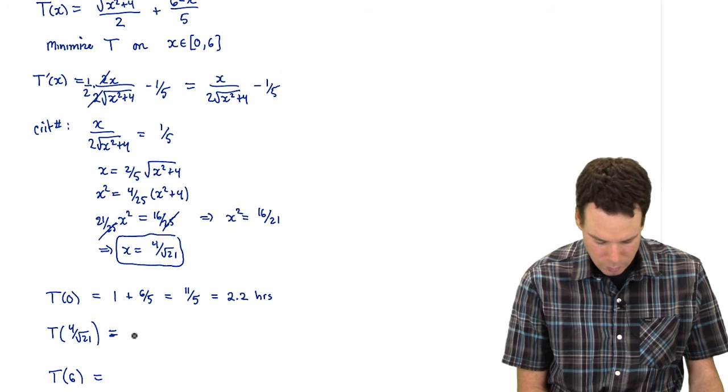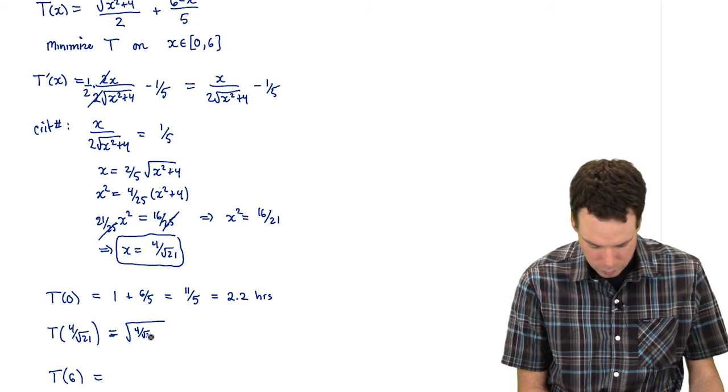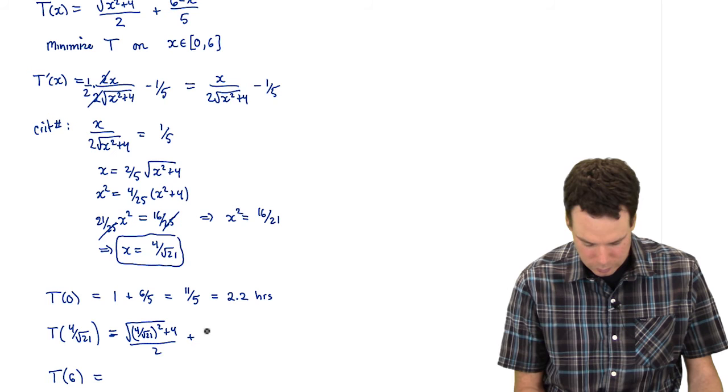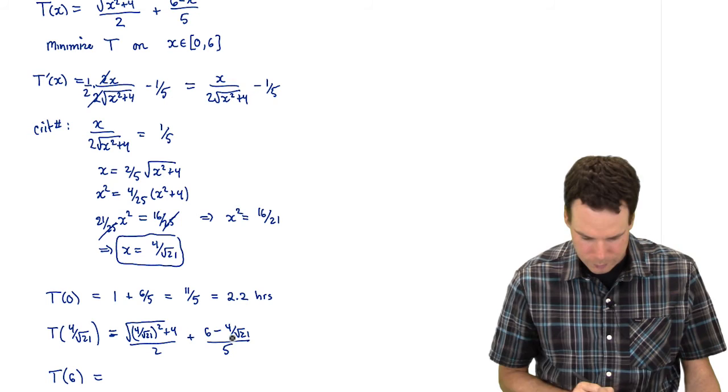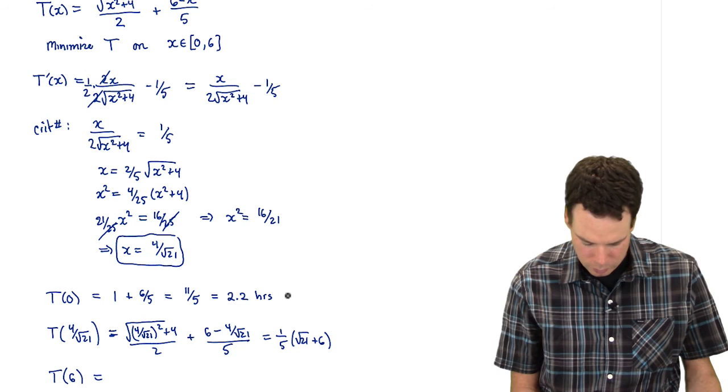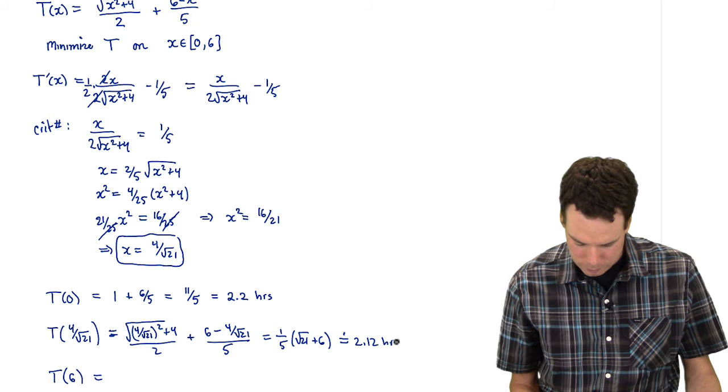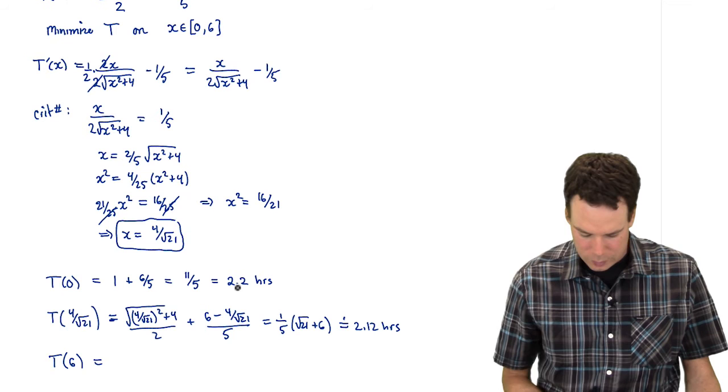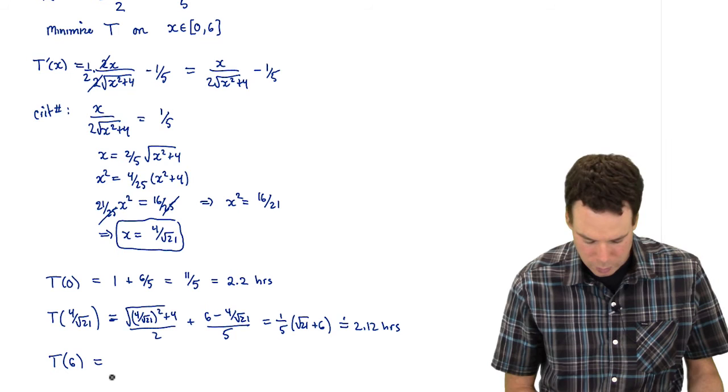So this would be the square root of 4 over root 21 all squared plus 4 over 2 plus 6 minus 4 over root 21 all over 5. And we can do a bit of simplification here and we get that it's 1 fifth square root of 21 plus 6. And that is approximately 2.12 hours. So it's smaller than our previous result. So, so far she makes better time by stopping here.